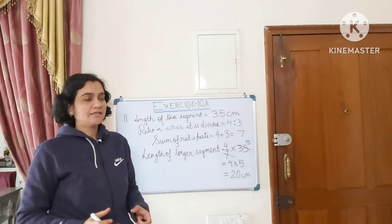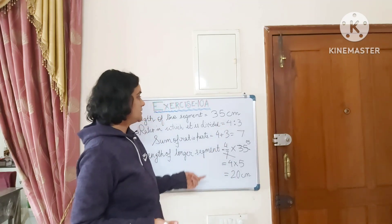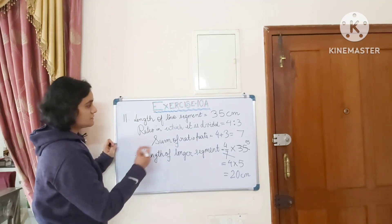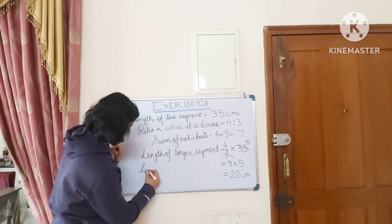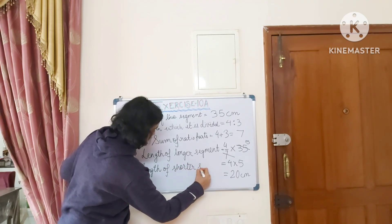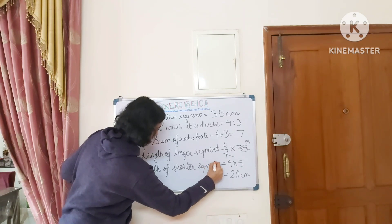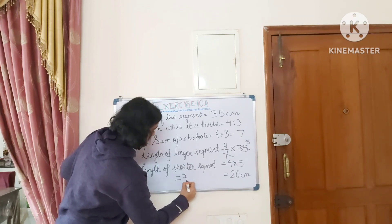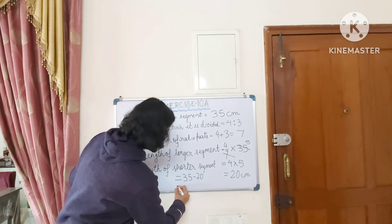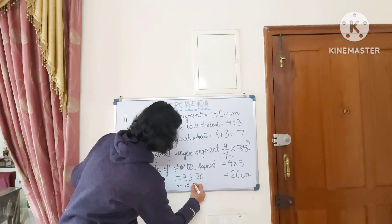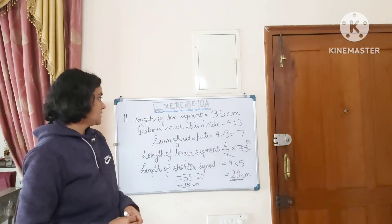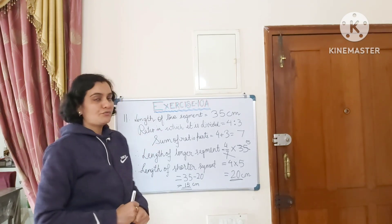For the shorter segment, we can either calculate 3 by 7 of 35, or simply subtract 20 from 35. Using subtraction: length of shorter segment equals 35 minus 20, which is 15 centimeters. So the answer is 20 centimeters and 15 centimeters — this is how the 35 cm line segment is divided. End of question number 11.